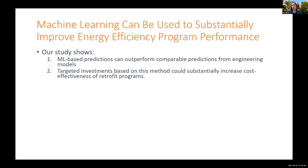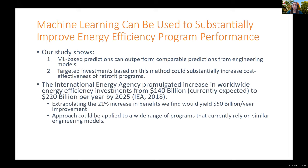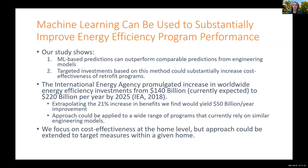To conclude, our study shows that machine learning-based predictions can outperform comparable predictions from engineering models, and targeted investments based on this method could substantially increase the cost-effectiveness of retrofit programs — maybe some win-win opportunities are back. As a back-of-the-envelope calculation: the International Energy Agency promulgated an increase in worldwide energy efficiency investments from $140 billion to $220 billion per year by 2025. If we extrapolate our 21% increase in benefits from targeting through machine learning, it would yield a $50 billion per year improvement. This approach could be applied to a wide range of programs relying on similar engineering models, and could be extended to target measures within a given home for even more savings.